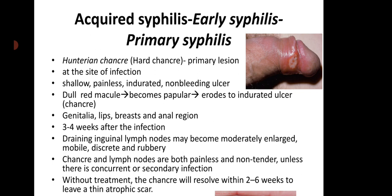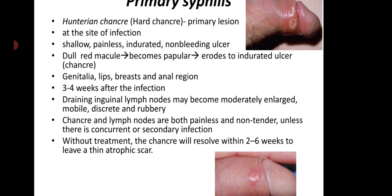The chancre occurs in the genitalia, lips, breast, and anal region, usually seen about 3 to 4 weeks after infection. The draining inguinal lymph nodes may become moderately enlarged, mobile, discreet, and rubbery. The chancre and lymph nodes are both painless and non-tender unless there is concurrent secondary infection. Without treatment, the chancre will resolve within 2 to 6 weeks, leaving a thin atrophic scar.